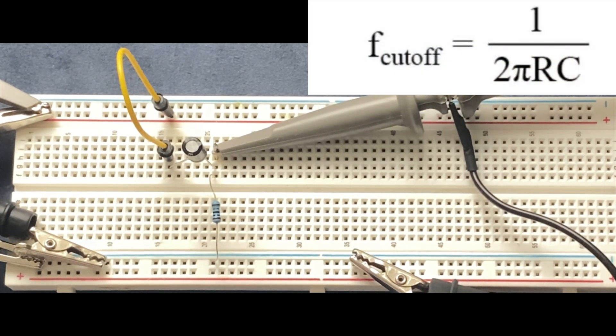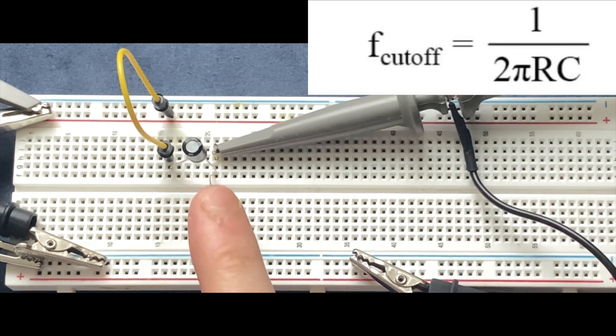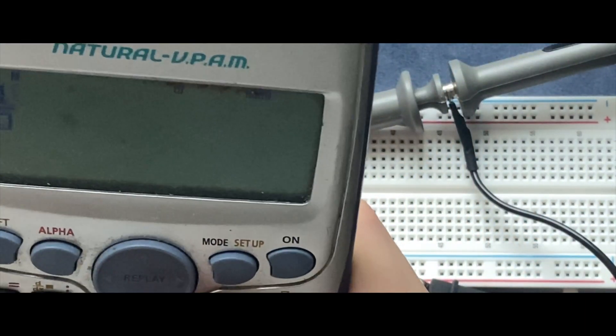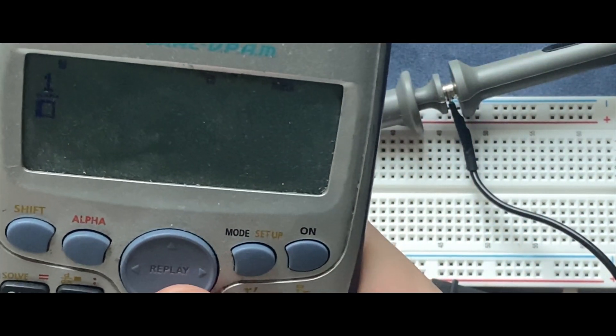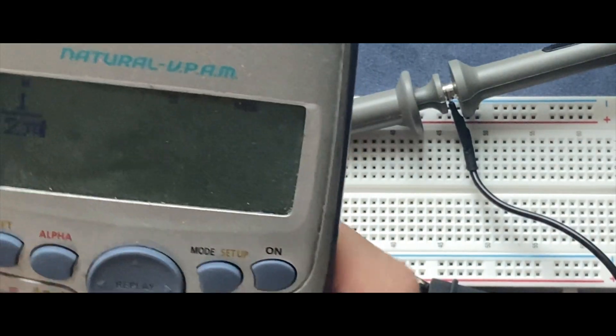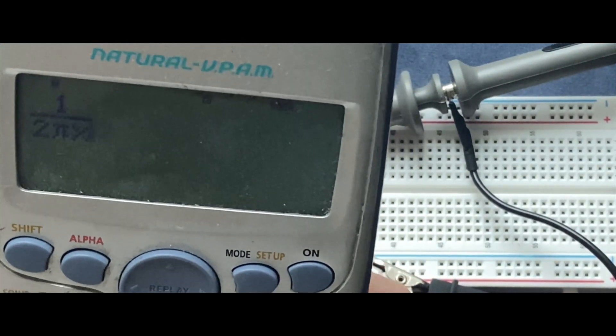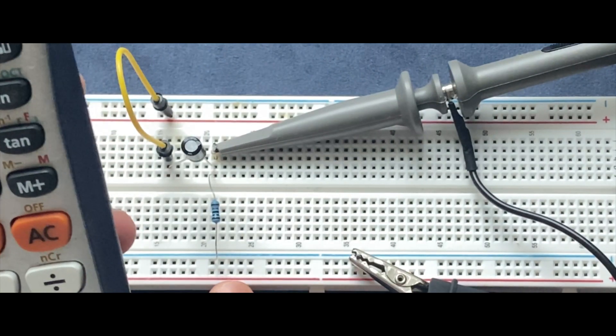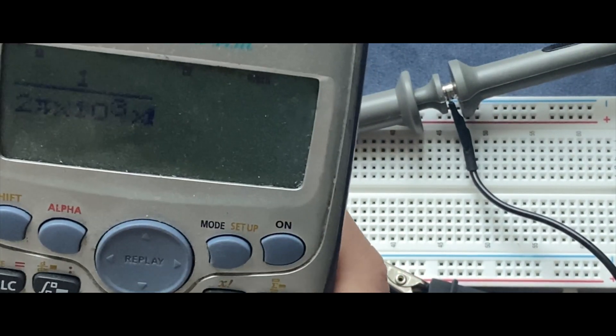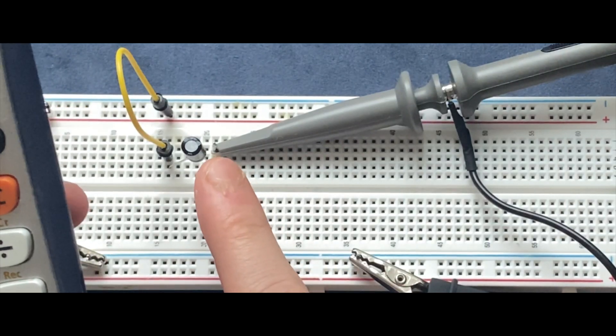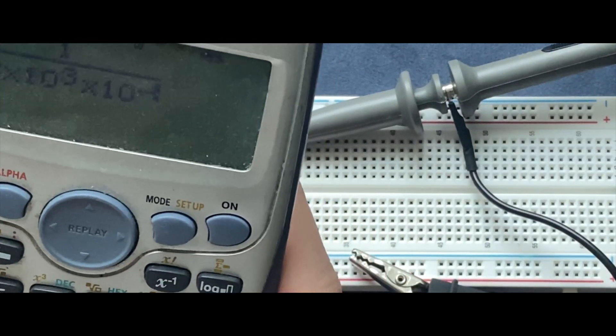In this video I used a one kilo ohm resistor and one microfarad capacitor. The formula for cutoff frequency is one over two pi multiplied by the resistor, which is 1k ohm or 10 to the power of three, and the capacitor, which is 1 microfarad or 10 to the power of minus six. So 159.15 hertz, approximately 160 hertz, is going to be my cutoff frequency.